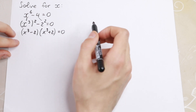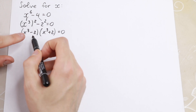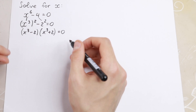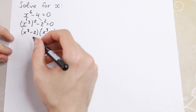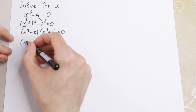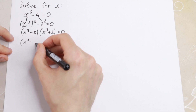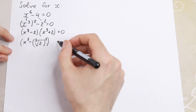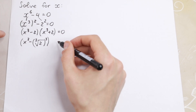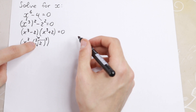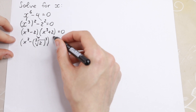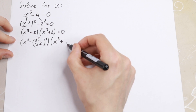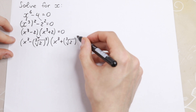So we have two parentheses. In the first parentheses we have x cube minus 2, which we write as x cube minus the cube root of 2 to the third power. And I do the same with the second parentheses — cube root of 2 to the third power on the right hand side.